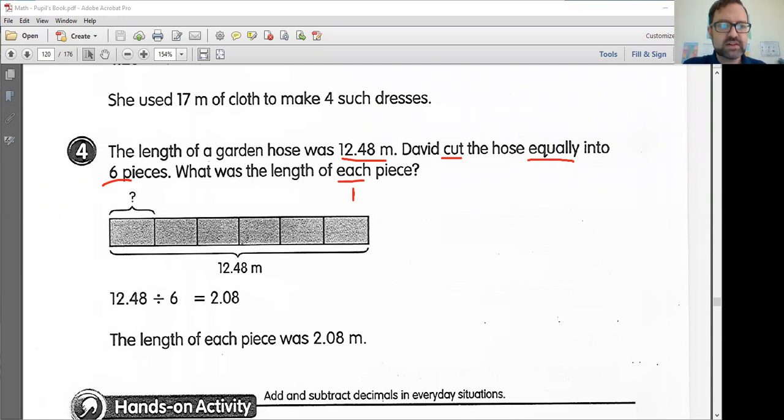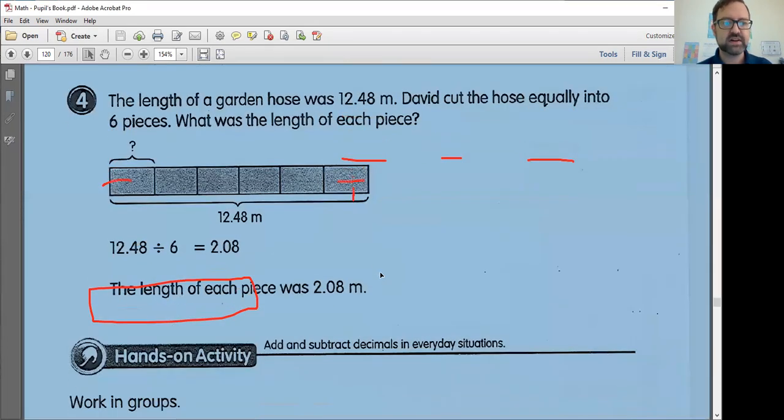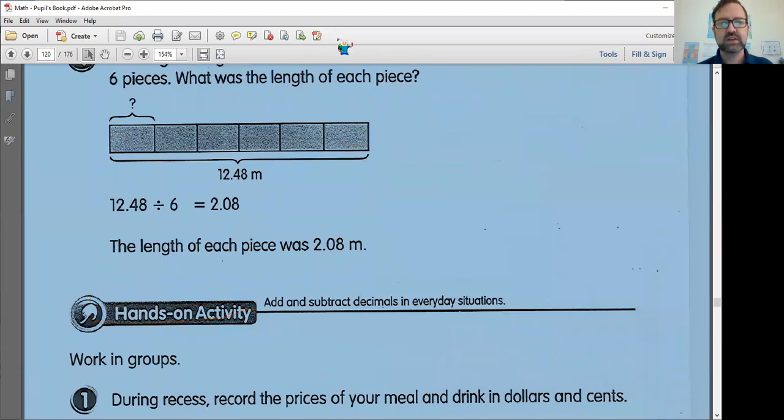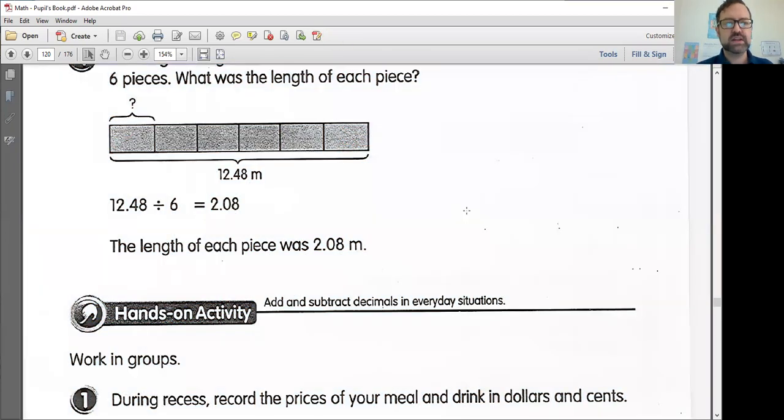So here's our wonderful diagram, our model that they made for us. We know the whole total here is 12.48 meters, and we have chopped this into six pieces. How much is one piece? And then we have written out our problem. 12.48 divided by six should equal 2.08. Please don't forget your zero or your decimal point when you're dividing these things. So the length of each piece should be 2.08 meters.